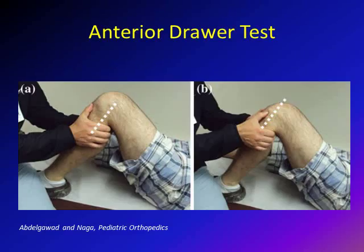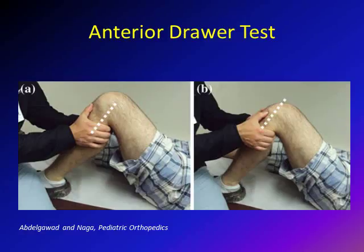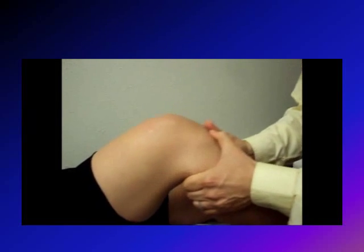The anterior drawer test stresses the knee to assess ACL function. Remember, the ACL prevents anterior tibial translation. To perform the test, you flex the hip to about 45 degrees and bend the knee to about 90 degrees. The physician sits on the patient's foot, grasps the upper tibia with both thumbs placed over it, and then pulls the tibia forward to see if it translates. We will now see a video of the anterior drawer test.